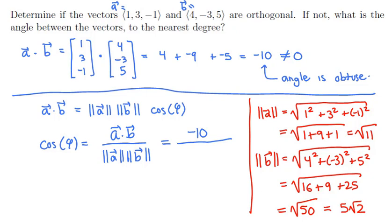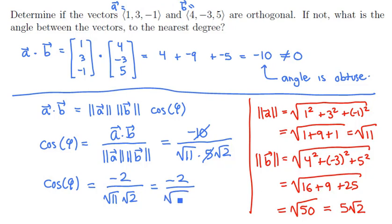So now that we know the two magnitudes, we can plug them in to our previous equation. We'll replace the length of A by the square root of 11, and the length of B by 5 root 2. Notice that you can cancel here. This gives us cosine of phi is equal to negative 2 divided by the square root of 11 times the square root of 2. And we can simplify that as negative 2 divided by the square root of 22.